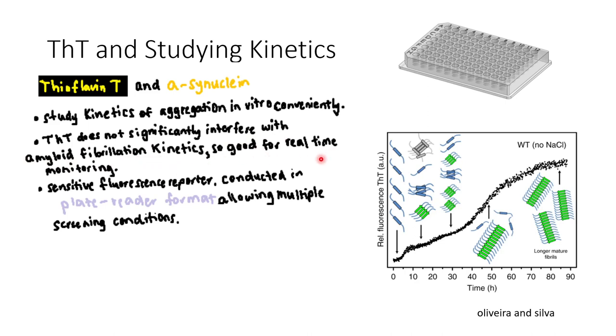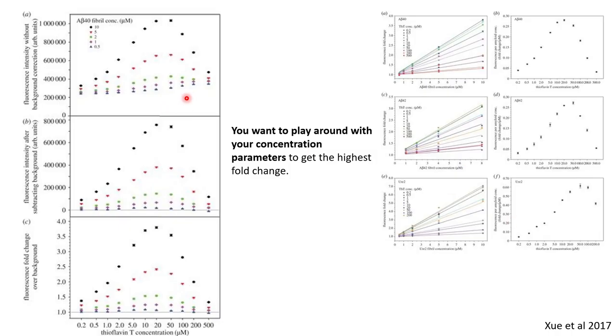And the good thing about ThT is that it doesn't significantly interfere with amyloid fibrillation kinetics, so it's pretty good for real-time monitoring. The rough output of your experiment is like over time you can quantify the fluorescence of ThT increasing. So here at time zero, this is alpha-synuclein aggregation, and as alpha-synuclein aggregates the fluorescence of ThT increases.